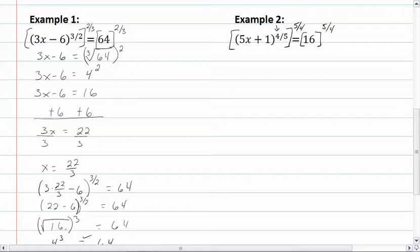So we now have 5x plus 1 equal to the fourth root of 16 raised to the fifth power. The fourth root of 16 would be 2 to the fifth power, and we will have a plus or minus because we have an even root. So now we have 5x plus 1 equal to plus or minus 32.